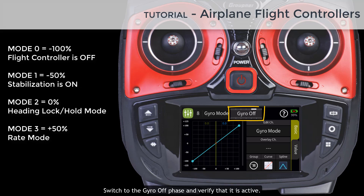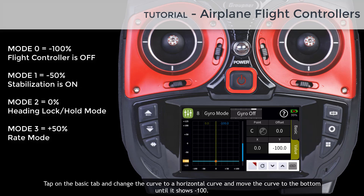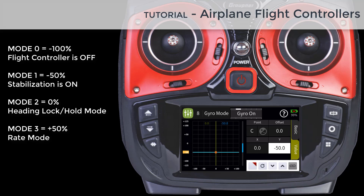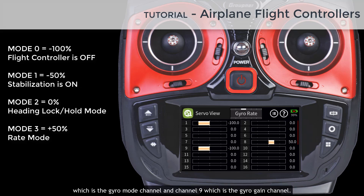Switch to the Gyro Off phase and verify that it's active. Tap on the basic tab and change the curve to a horizontal curve and move the curve to the bottom until it shows minus 100. Now change the flight phase for each of the modes and set up the curves accordingly. You can cross-check if all values are correctly set from the servo monitor by reviewing channel 8, the gyro mode channel, and channel 9, the gyro gain channel.